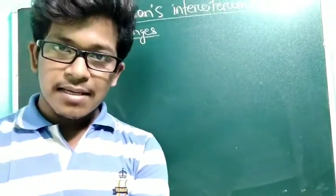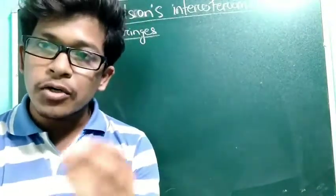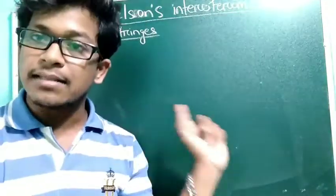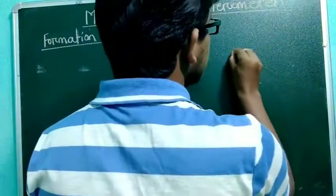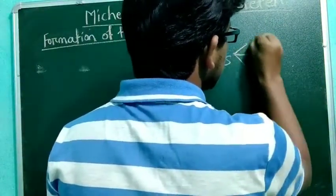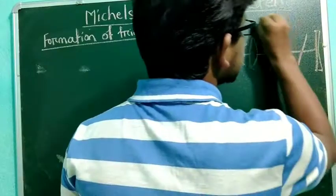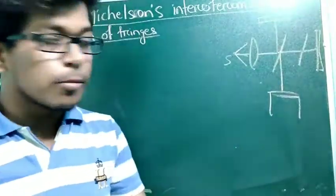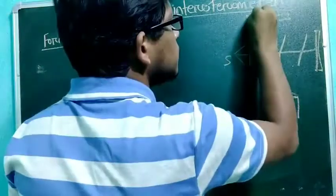In the last class I explained about the construction of the Michelson interferometer and how light goes and comes back, and how we introduced a glass plate to compensate the glass path covered by the ray. In this class we will study the formation of fringes and at the end we will see how circular fringes are formed. I will make a rough figure here — your source, your collimating lens — this is your Michelson interferometer.